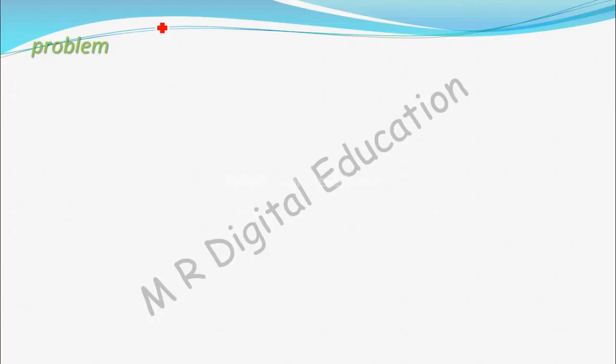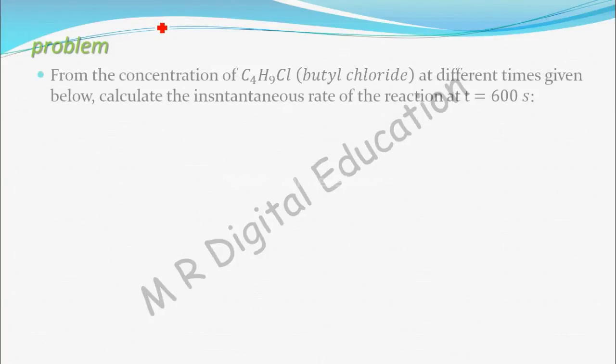Let's see a problem on instantaneous rate of reaction. From the concentration of C4H9Cl (butyl chloride) at different times given below, calculate the instantaneous rate of the reaction at time t = 600 seconds.